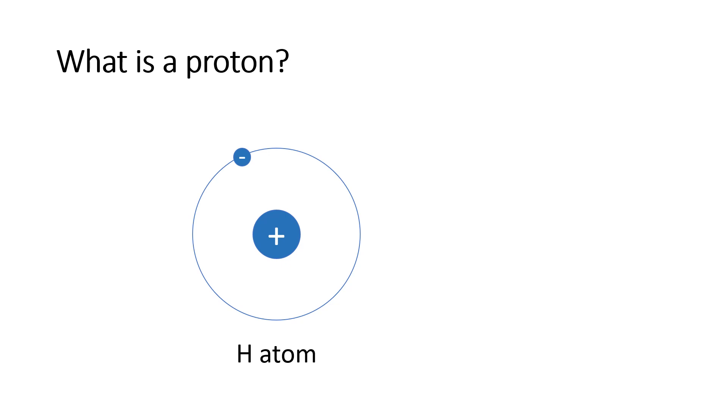Before we jump into the Bronsted-Lowry definition, I'd like to take a moment to look at what is a proton. If you'll remember back from an earlier chapter when we were looking at protons, electrons and neutrons, those are the basic particles that make up all atoms. A hydrogen atom is the simplest atom we have. In its nucleus, we have a single proton and then orbiting that nucleus, there will be a single electron. We know there is one of each because the atomic number of hydrogen is one.